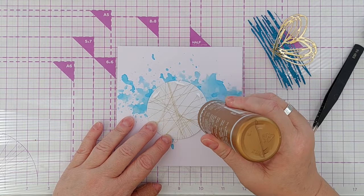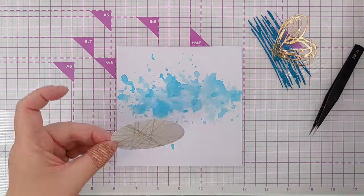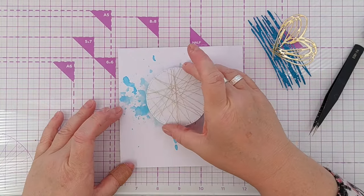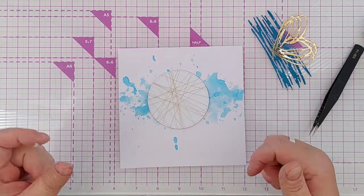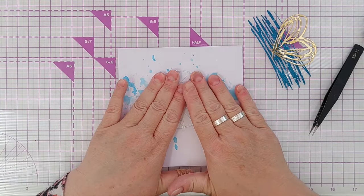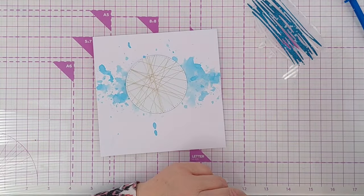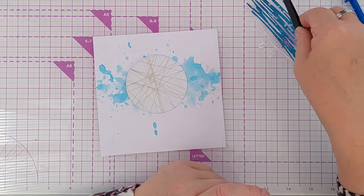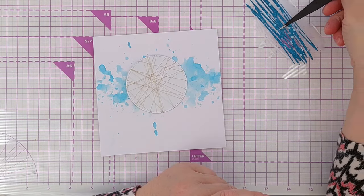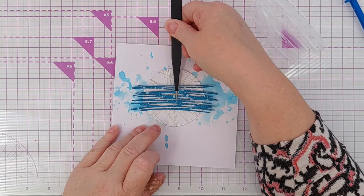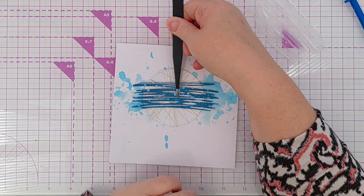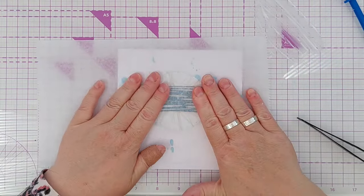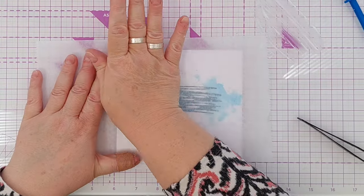I then added some glue to the back of the circle and popped it in the middle of my card panel. Then I dipped my zigzaggy dark blue die cut into some glue and layered that on top of the circle. I pressed that down with some deli paper just to give it a good press and keep my fingers clean and keep the die cut and card clean.